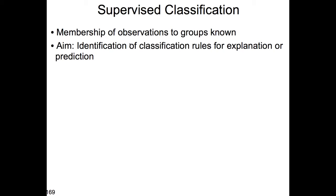Welcome to the final topic of the course of Applied Multivariate Statistics. This final topic is supervised classification. Today we will mainly deal with classification and regression trees. Supervised classification is a classification technique that tries to explain group memberships by variables — for example, environmental variables in the case of environmental science.